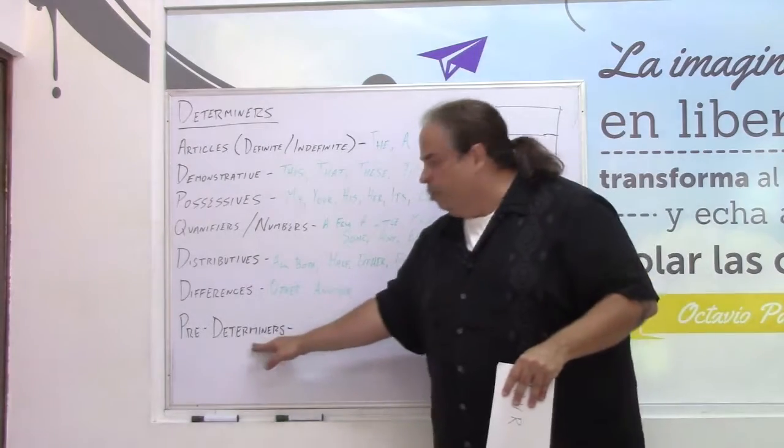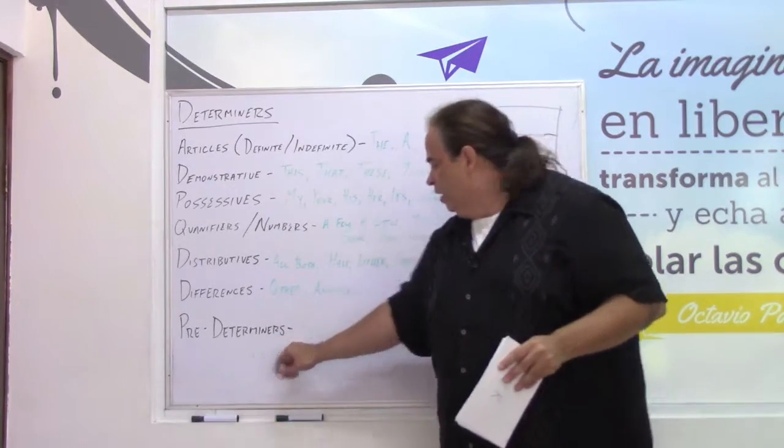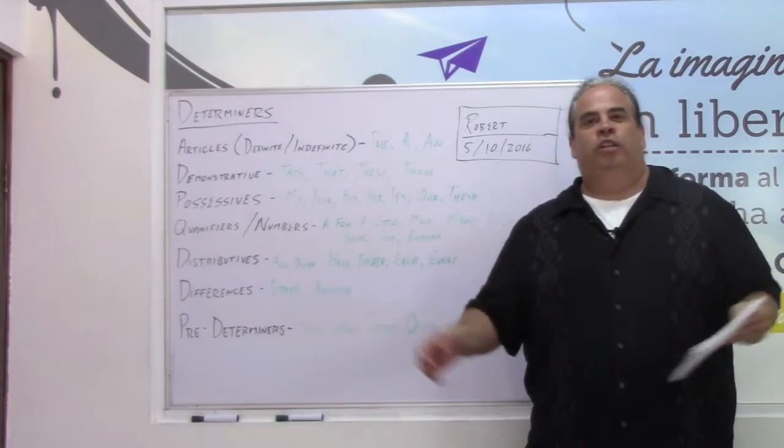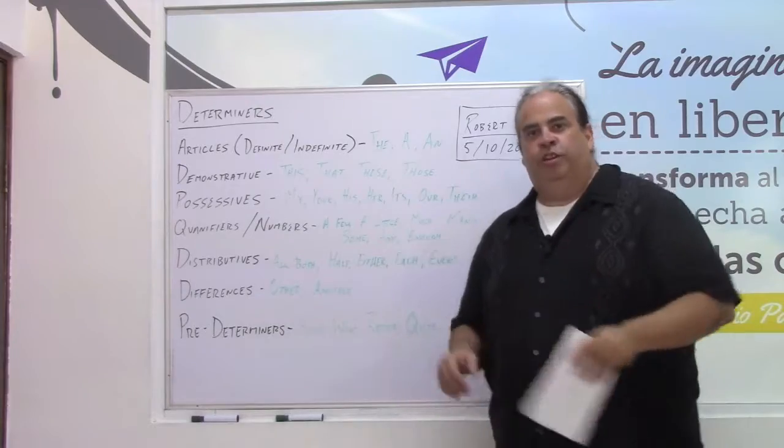And then you have the predeterminators. The predeterminators, a little more complicated. Such, what, rather, quite. That dog was quite large. So it's a predeterminator.